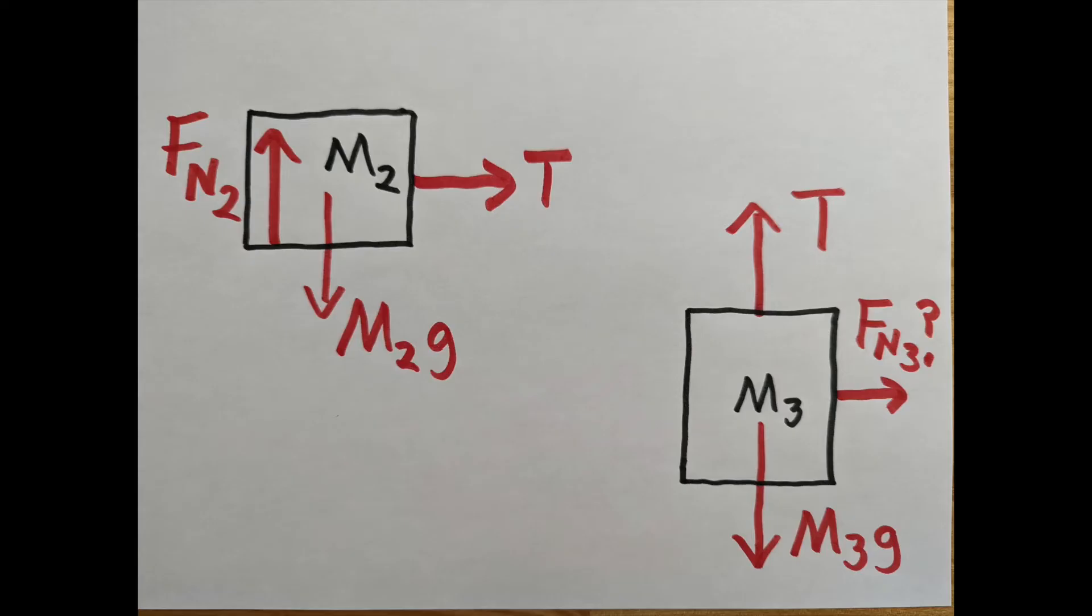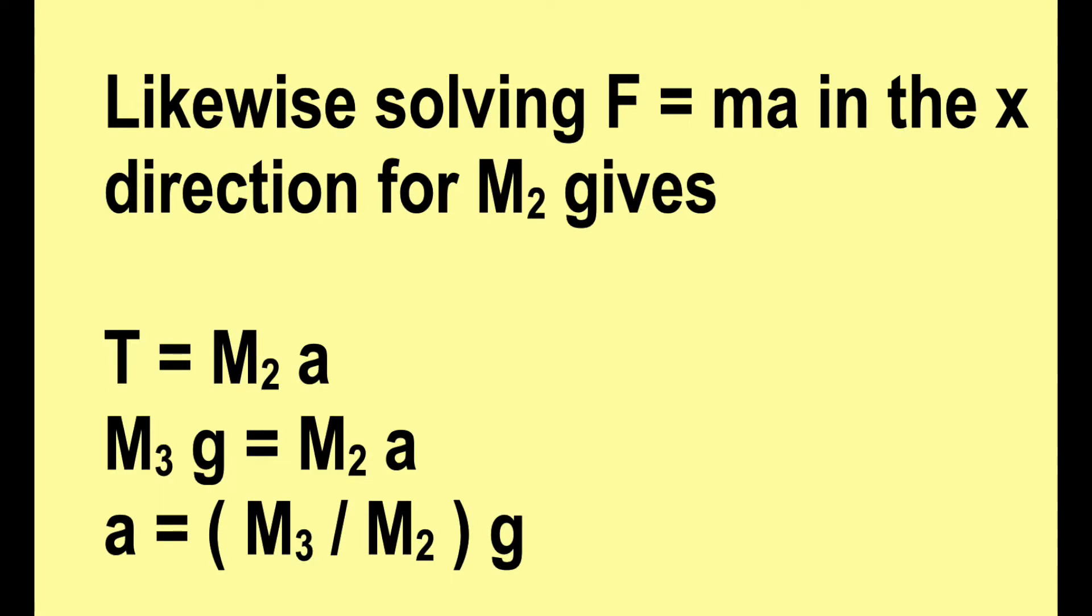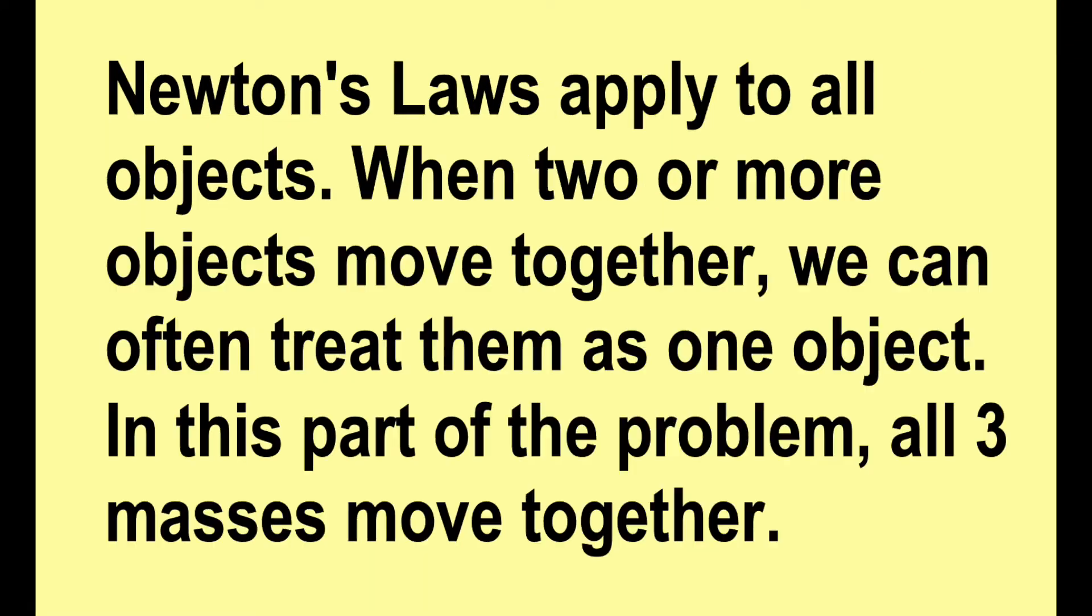Likewise, the force diagram for m2 looks simple in the x direction. Solving F equals ma for that in the x direction gives us the acceleration. It's m3 over m2 times g. Again, since all three objects move together, we can treat them as one object.